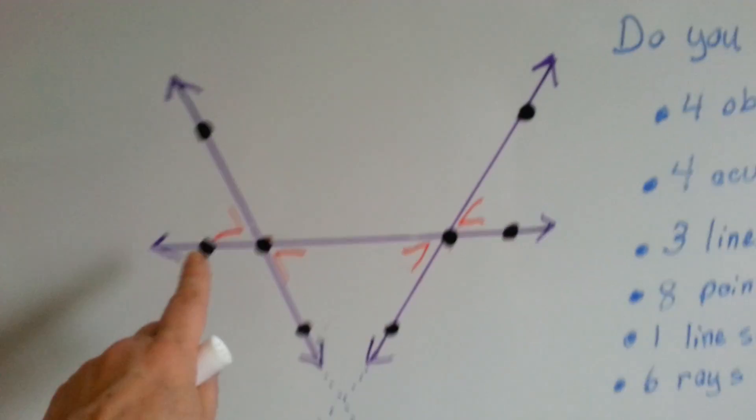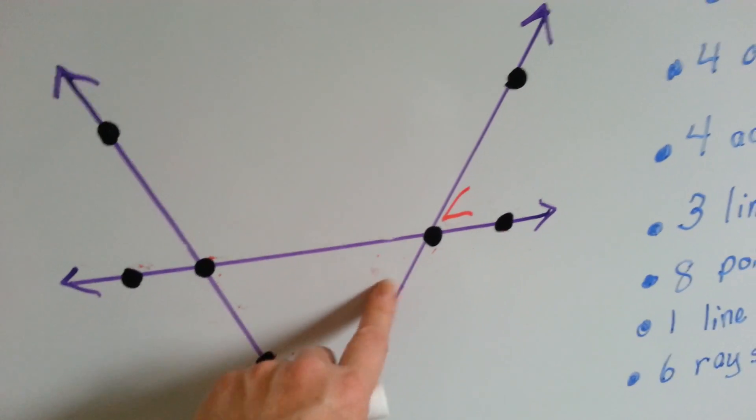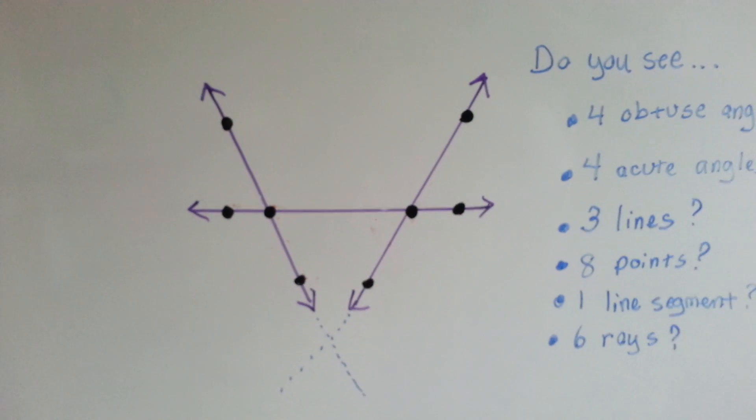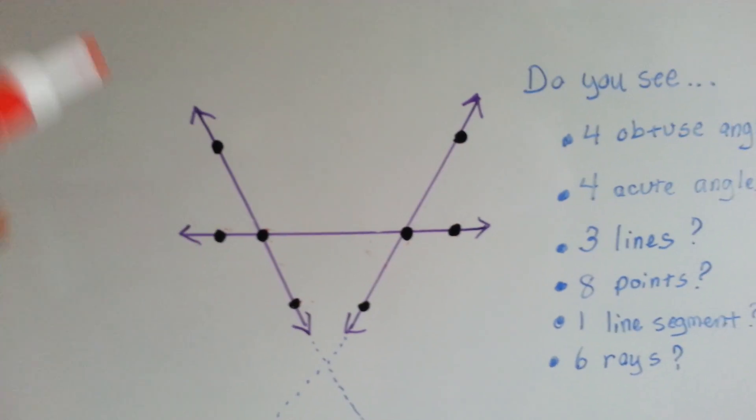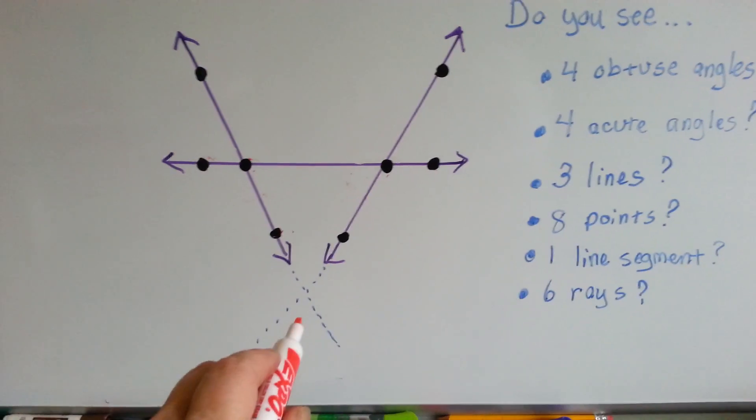Do you see three lines? Let's get rid of these again. Do you see three lines? Three full lines. Not line segments. Three full lines. Remember, they've got arrows on the tips. There's one line, two line, three line.